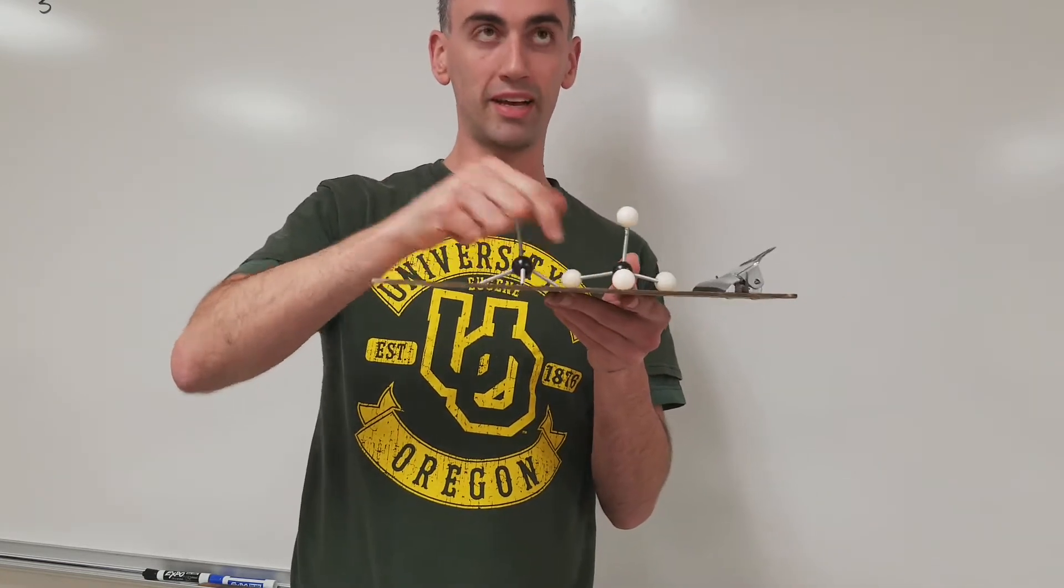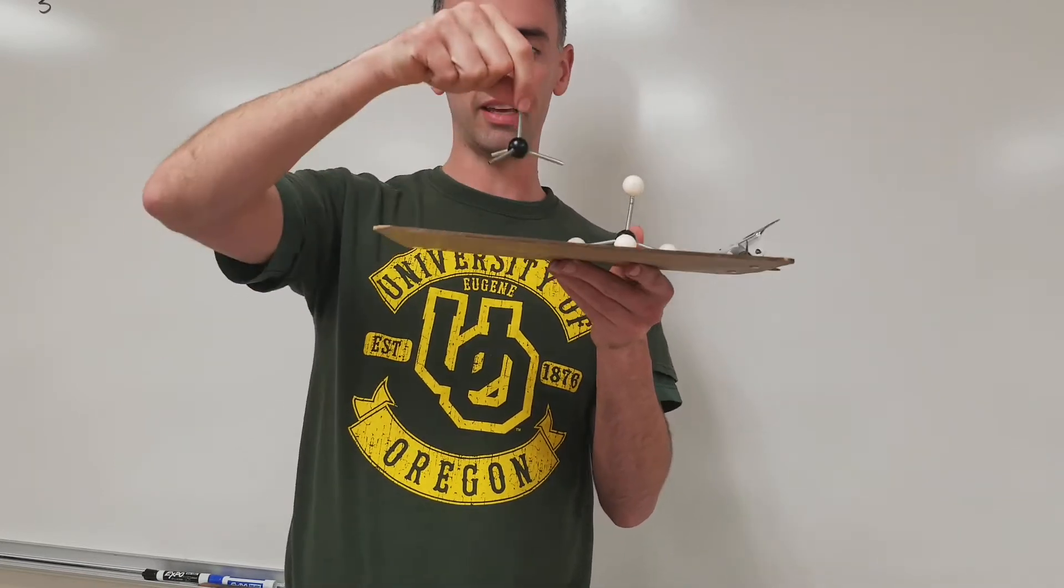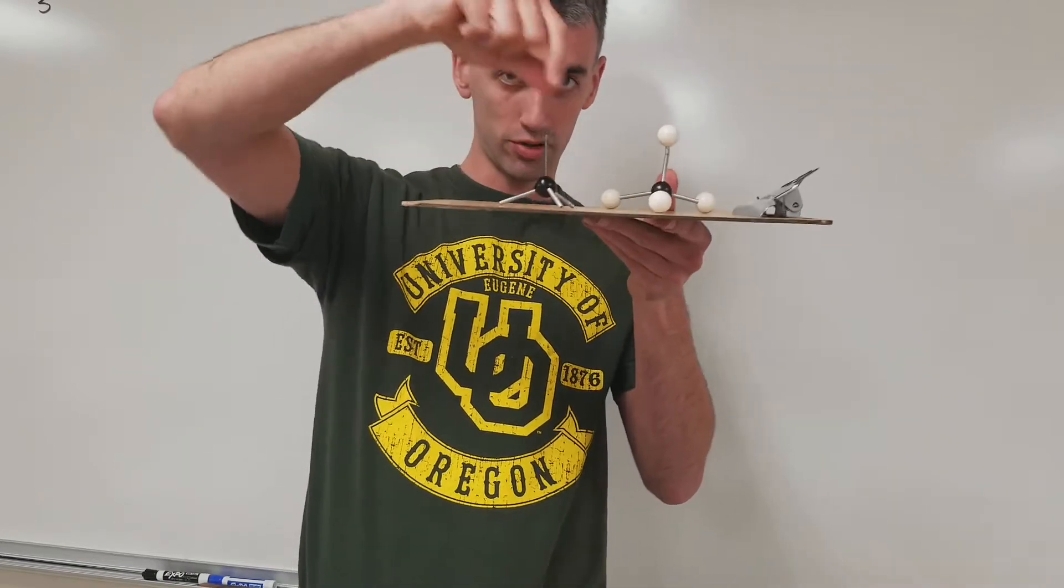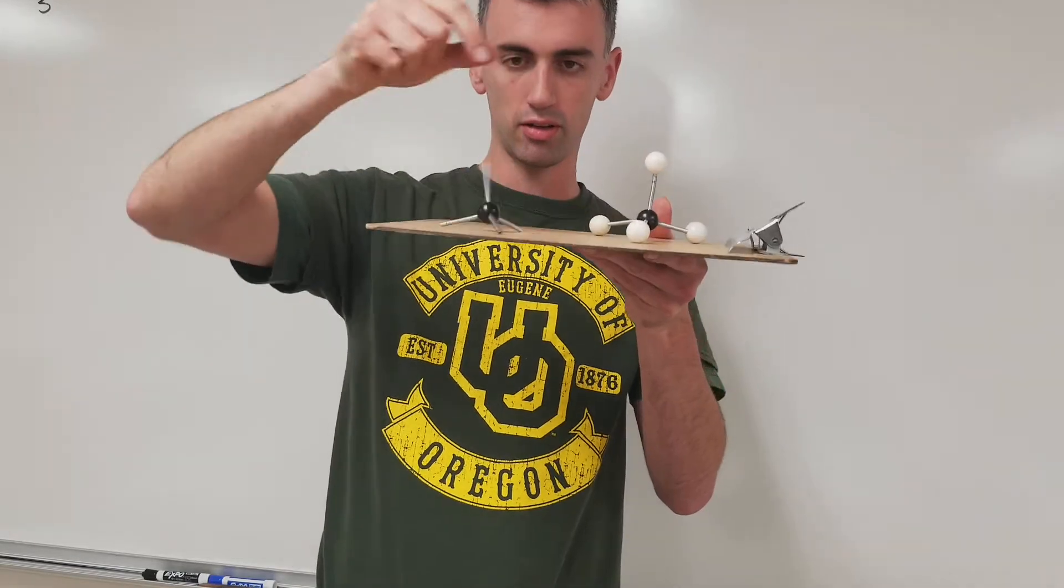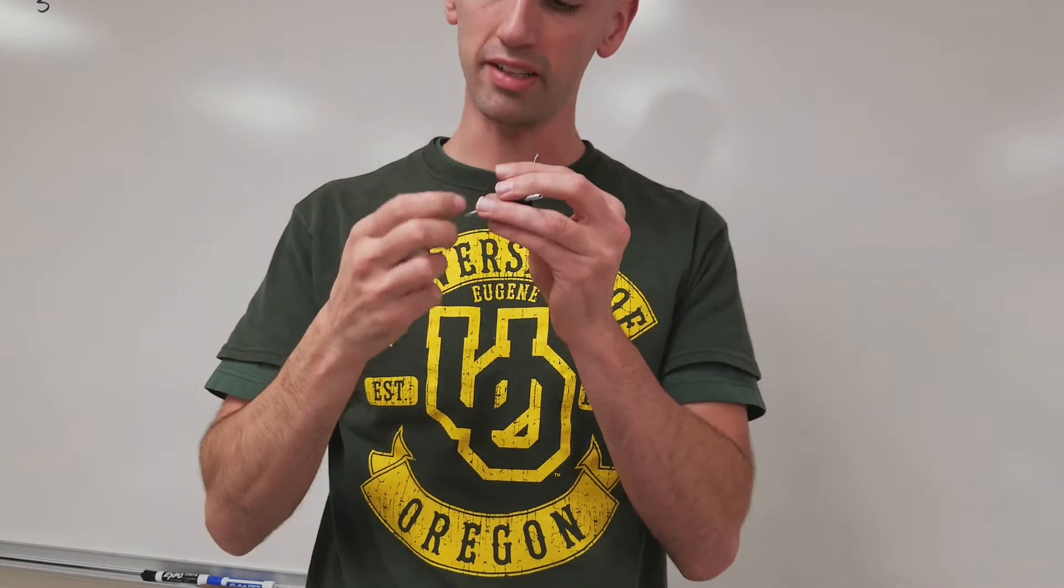So if you strip away the atoms, you just get the tetrahedral shape. So this is tetrahedral electron geometry. Let's put this back together.